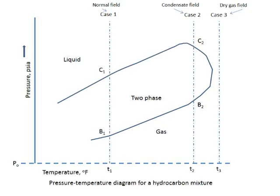For the pressure-temperature diagram for a mixture of hydrocarbons, we're going to look at case one. Case one is at a temperature of T1, which remains constant throughout production regardless of the pressure in the reservoir. As we start producing oil in the reservoir, the pressure is drawn down to a point C1. C1 is the bubble point. Above the bubble point, we are in the unsaturated state. Below the bubble point, between C1 and B1, the dew point, we are said to be in a saturated state. Beyond B1, we would be in gas.